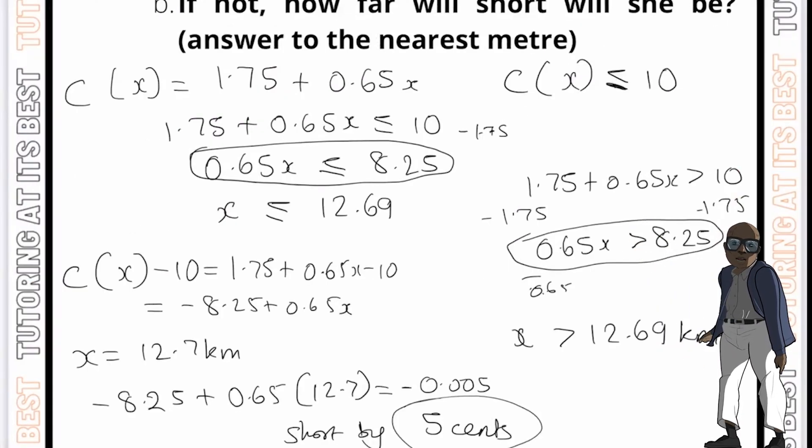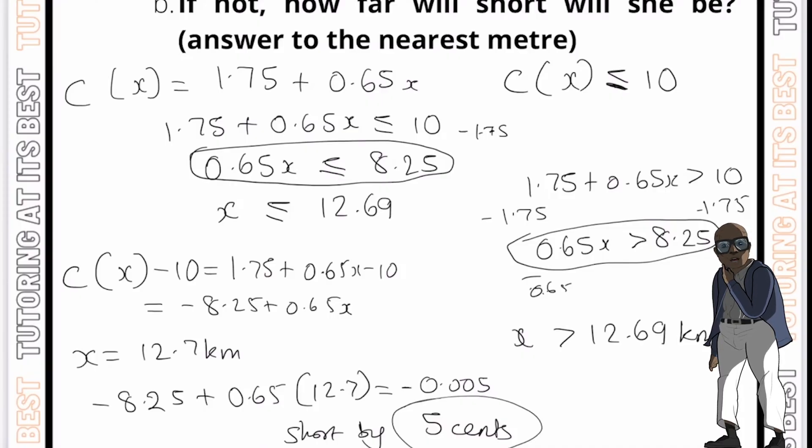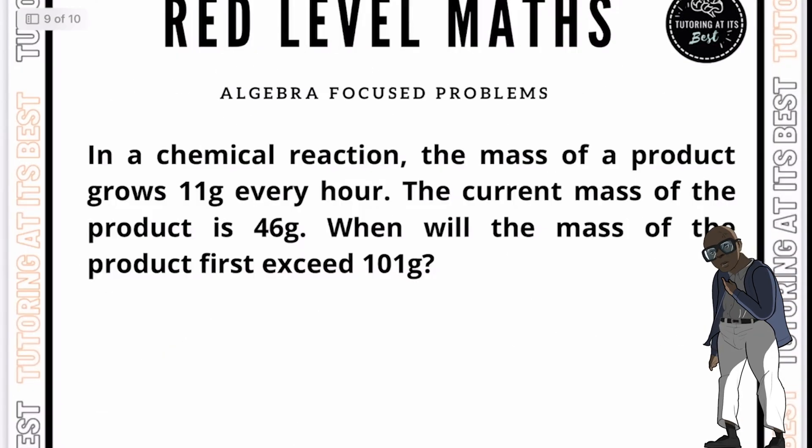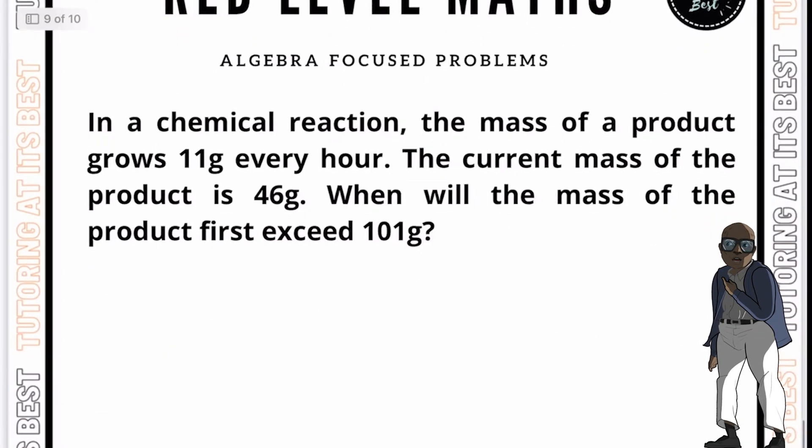So once again, remember that multi-step problems can be daunting, but breaking them down into smaller parts can make them more manageable. So what did we walk away with this question? We'll try to identify what steps are necessary to solve the problem and write them down. Then tackle each step one at a time, checking your work as you go. And this will help you stay organized and avoid getting overwhelmed. All righty. Let's move over into our second last question.